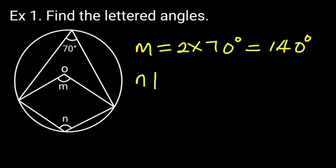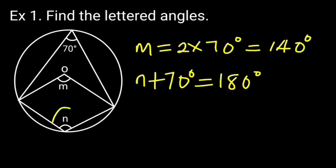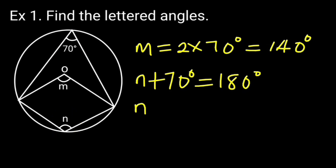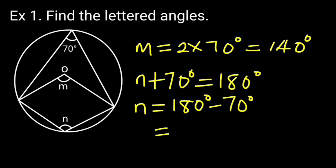N plus 70 degrees is equal to 180 degrees. Reason: Sum of opposite angles of a cyclic quadrilateral is supplementary, that is 180 degrees. N is equal to 180 degrees minus 70 degrees, which is 110 degrees.